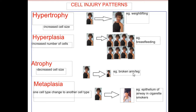An example of atrophy is with a broken arm or leg — when you remove the cast, that leg is way skinnier than the other leg. The last one is metaplasia, where one cell type changes to another cell type.